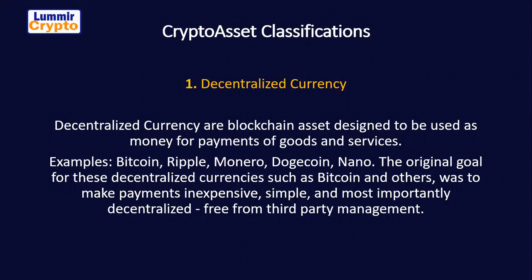The original goal for decentralized currencies such as Bitcoin and others was to make payments inexpensive, simple, and importantly decentralized — free from third-party management. When you have a decentralized currency, you don't need a middleman to transact. It's purely decentralized.